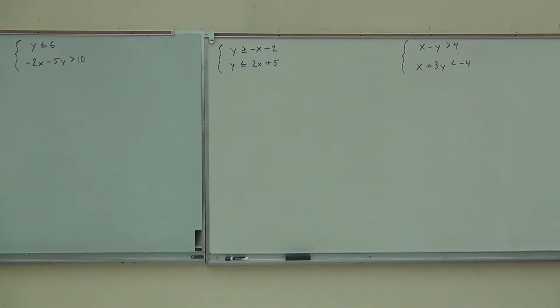So we're graphing each inequality individually, just making sure we're shading both of them. Where the shading overlaps, that's what we're calling our solution set.